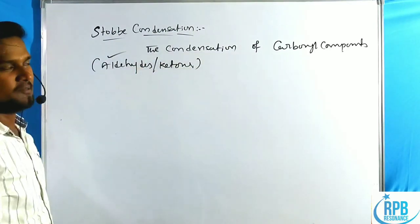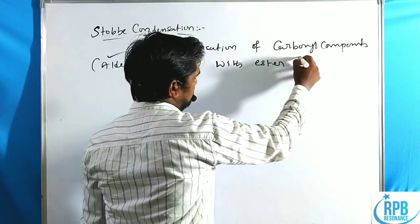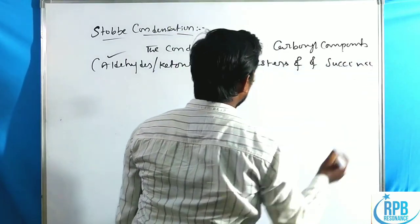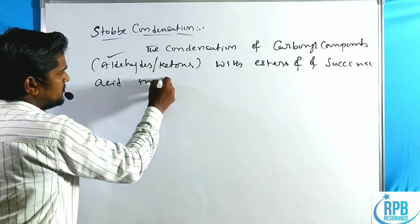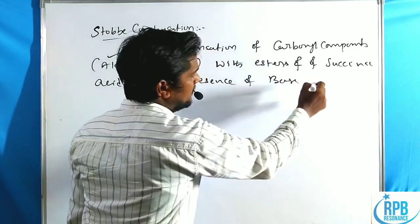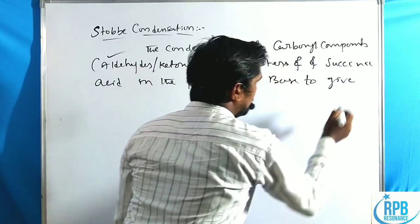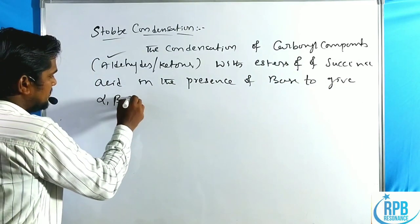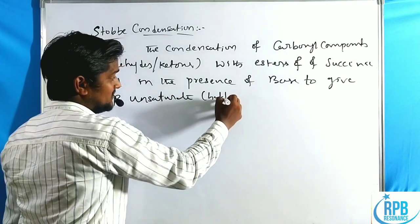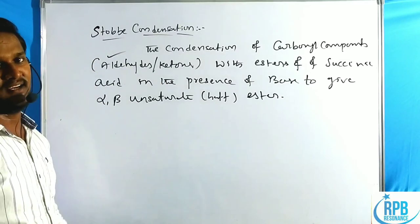Among aldehydes and ketones, aldehydes are more preferable carbonyl compounds. These react with esters of succinic acid in the presence of a base to give alpha-beta unsaturated half-esters. Only one ester is retained; the other gets hydrolyzed.